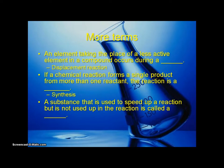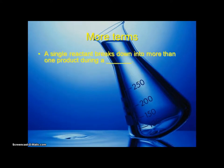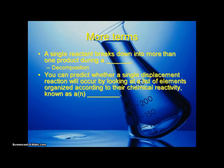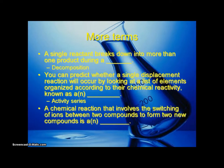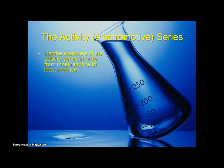A substance that is used to speed up a reaction but is not used up in the reaction is called a catalyst. A single reaction that breaks down into more than one product occurs during a decomposition. You can predict whether a single displacement reaction will occur by looking at a list of elements organized according to their chemical reactivity, known as an activity series. A chemical reaction that involves a switching of ions between two compounds to form two new compounds is a double displacement.